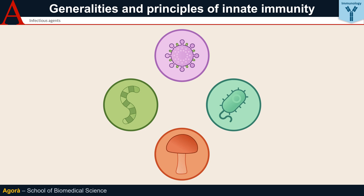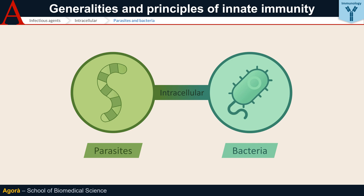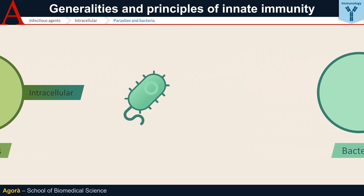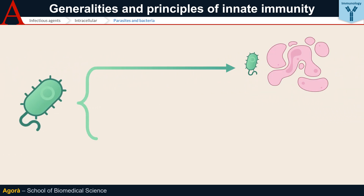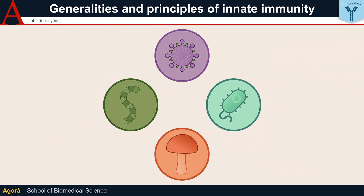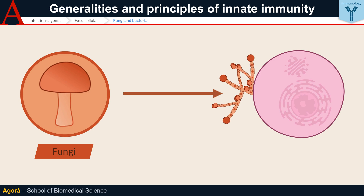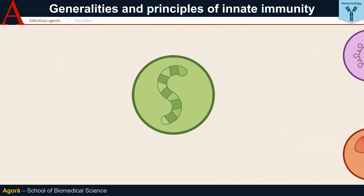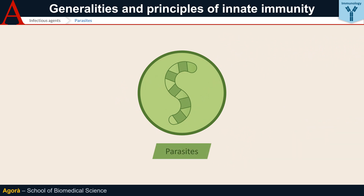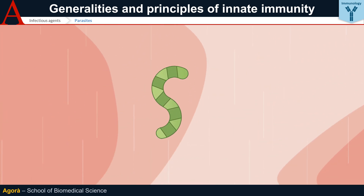Larger than viruses are some intracellular bacteria such as mycobacteria, the class the aetiological agent of tuberculosis belongs to, as well as some intracellular parasites such as the plasmodium responsible for malaria. They can kill the infected cell either directly or through the production of toxins. Moving up the scale we find extracellular bacteria and fungi which grow outside the cells where they release toxins harmful to the body. Finally, larger parasites such as worms or helminths act by damaging the tissue they infect by forming and depositing cysts inside it.